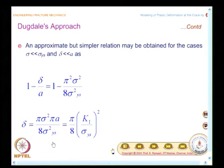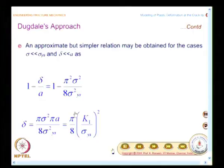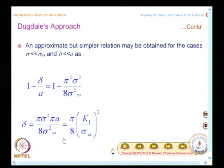Since this is a center crack in an infinite plate, we can write delta = (π/8) × (K1/sigma_ys)². In all problems dealing with plastic zone length, you have an expression of the form (K1/sigma_ys)² pre-multiplied by a factor. Here the factor is π/8. We will also have a summary of these quantities and compare the simplistic model, Irwin's model, and Dugdale's model.